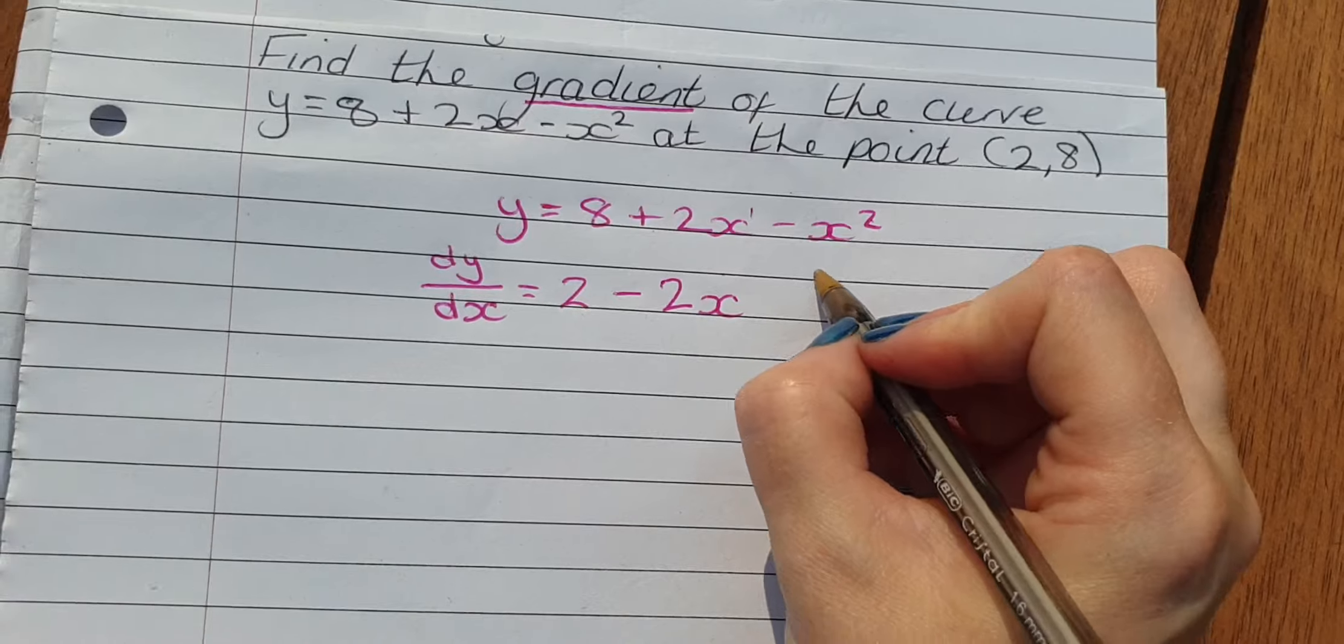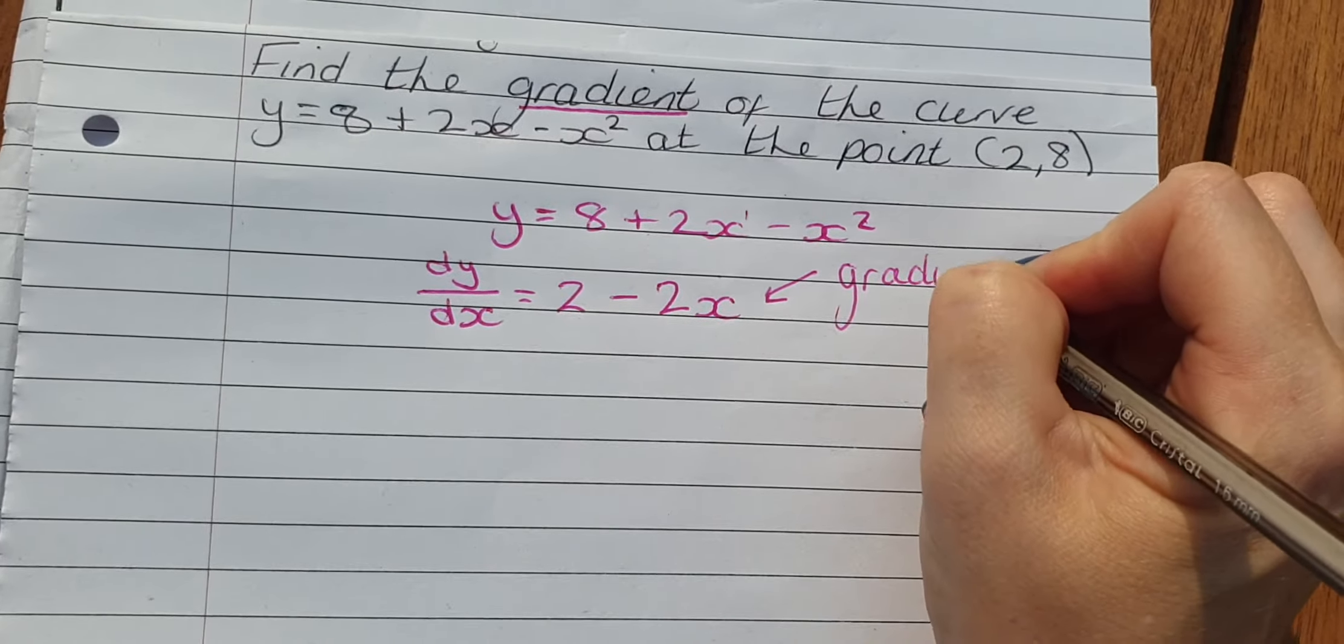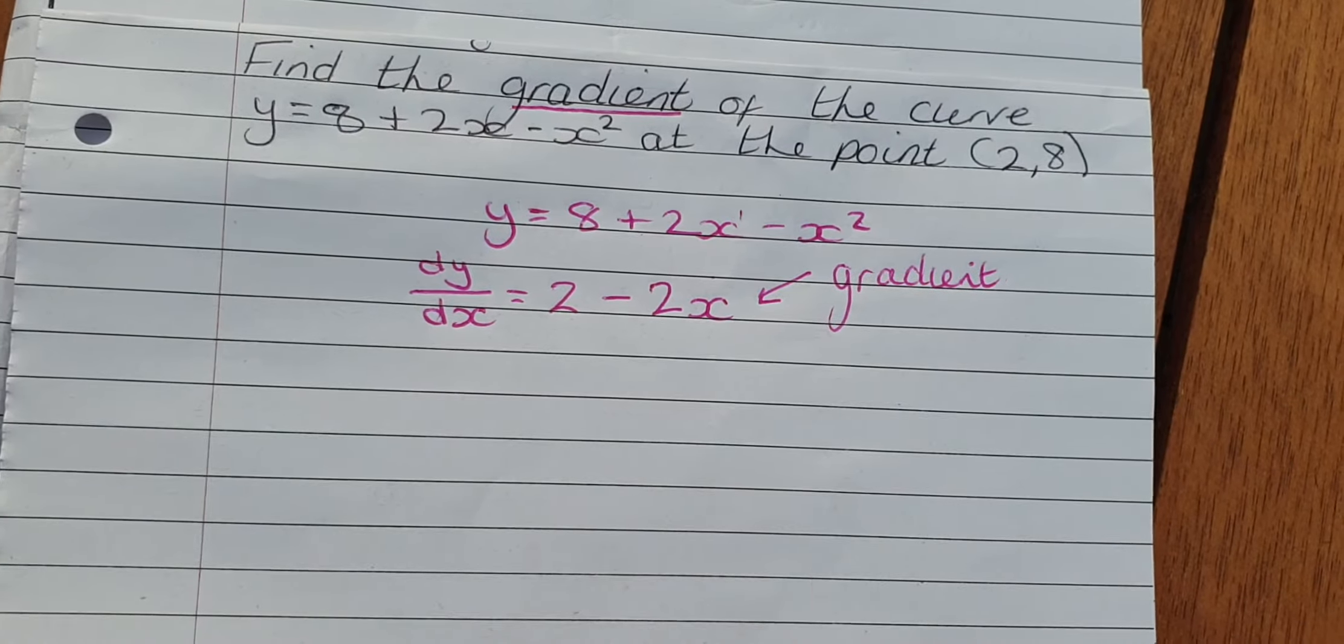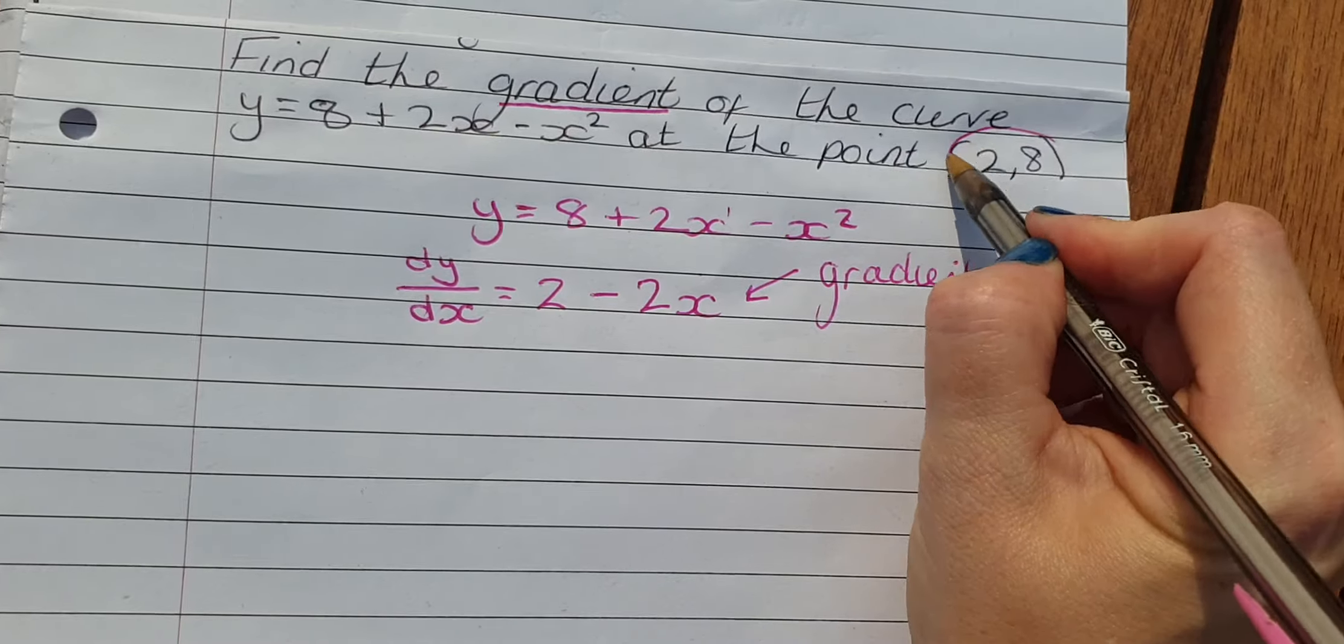So when I've differentiated, this is the gradient at any point. I could sub in any value for x and it would tell me the gradient at that point. I want to know the gradient at this point.